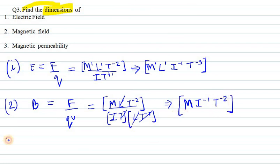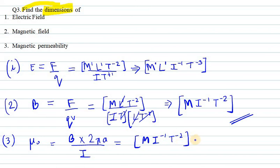Now for the third part we have magnetic permeability. Magnetic permeability can be defined as B into 2 pi A over I. We have the units for B already in the second part, so we can write M I raise to power minus 1 T raise to power minus 2 into 2 pi. 2 pi is a constant so we won't write any unit for it. A can be defined in terms of L, that is length.